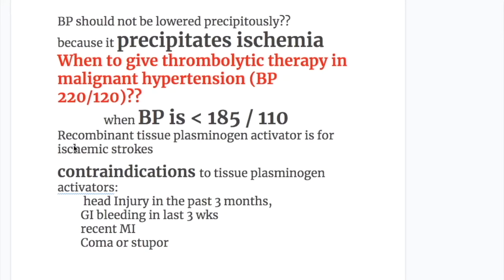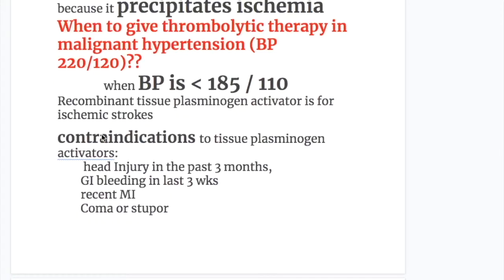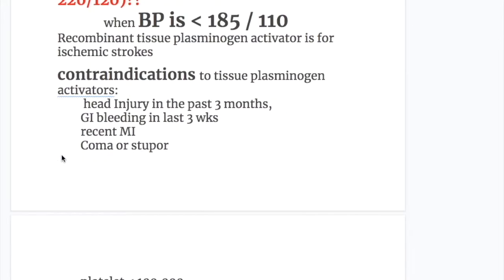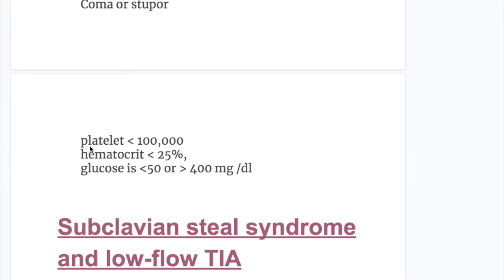Recombinant tissue plasminogen activator is used for ischemic stroke. Contraindications to tPA include head injury in the past 3 months, GI bleeding in the past 3 weeks, recent MI, coma or stupor, platelet count less than 100,000, hematocrit less than 25%, or glucose less than 50 or more than 400 mg per 100 ml.